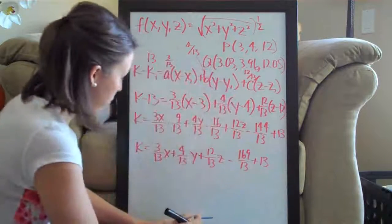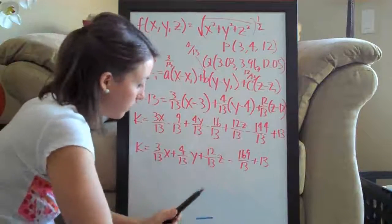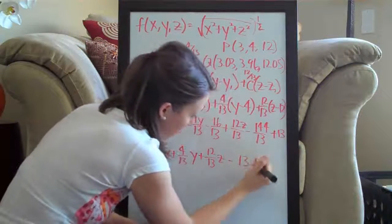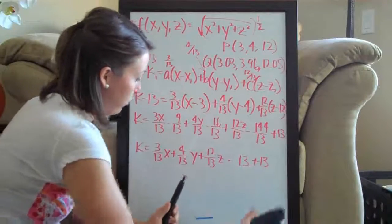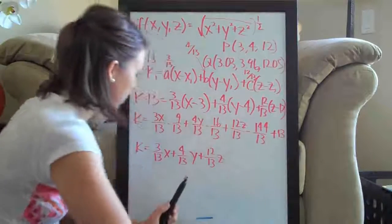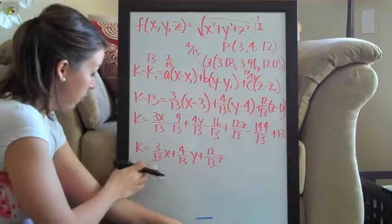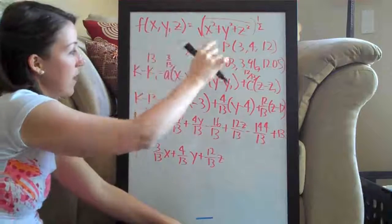And of course that simplifies, one sixty-nine over thirteen is thirteen. So we have minus thirteen plus thirteen which would be plus zero. So that's all going to go away. So this is our simplified equation of the tangent plane to the graph of this function at this point.